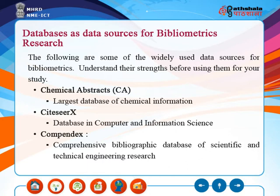Some of the widely used data sources for bibliometrics are explained here. The list is illustrative and not comprehensive, and is given in alphabetical order just to avoid bias in presentation. Chemical Abstract Service, popularly known as CAS, is a division of the American Chemical Society. Its publication is called Chemical Abstracts. It is the largest database of chemical information, covering books, journal articles, patents, conference proceedings, and so on. Its coverage is from 1907 onwards.